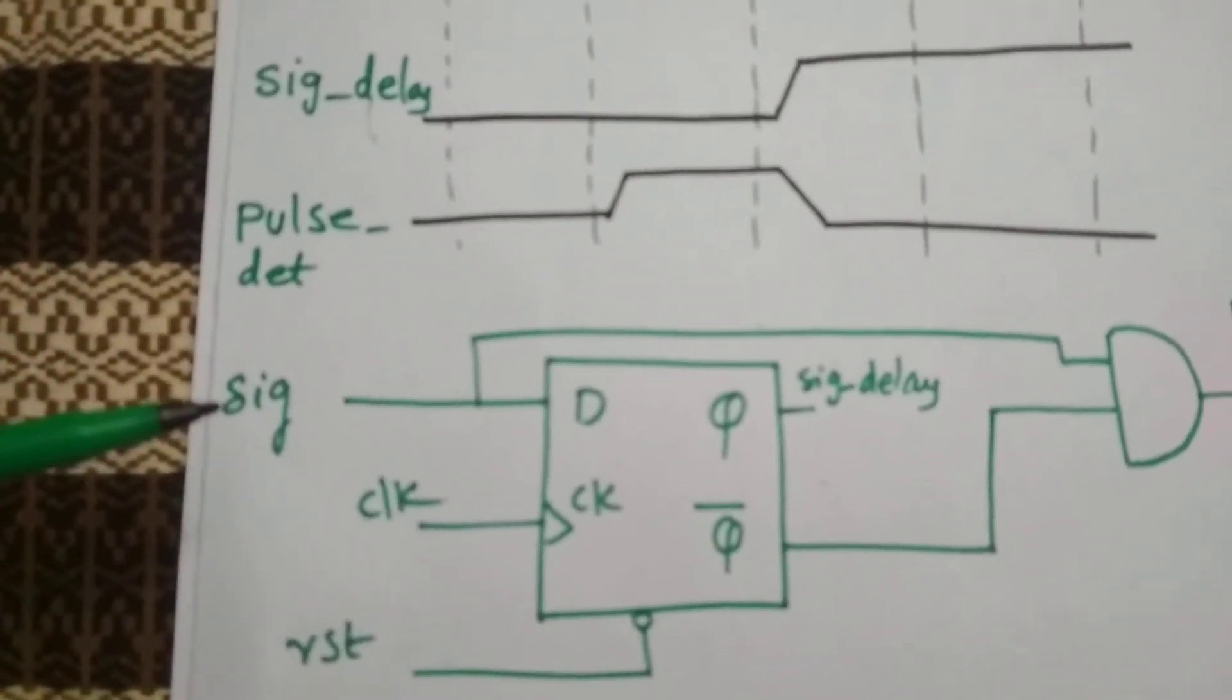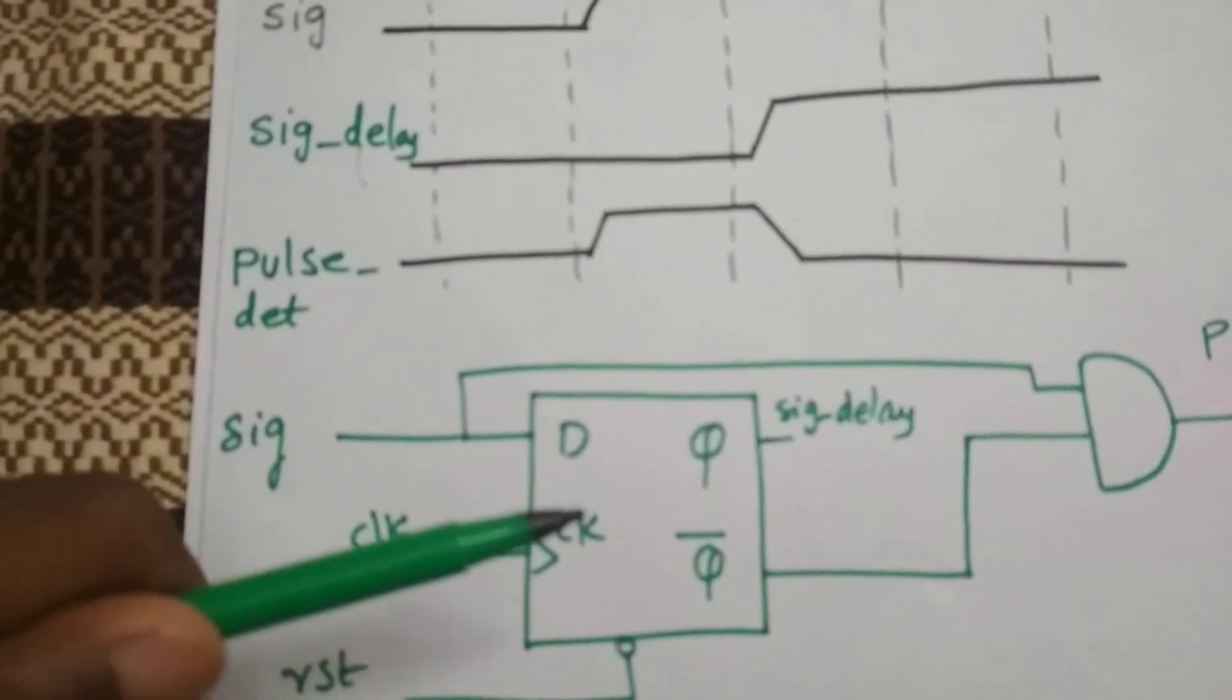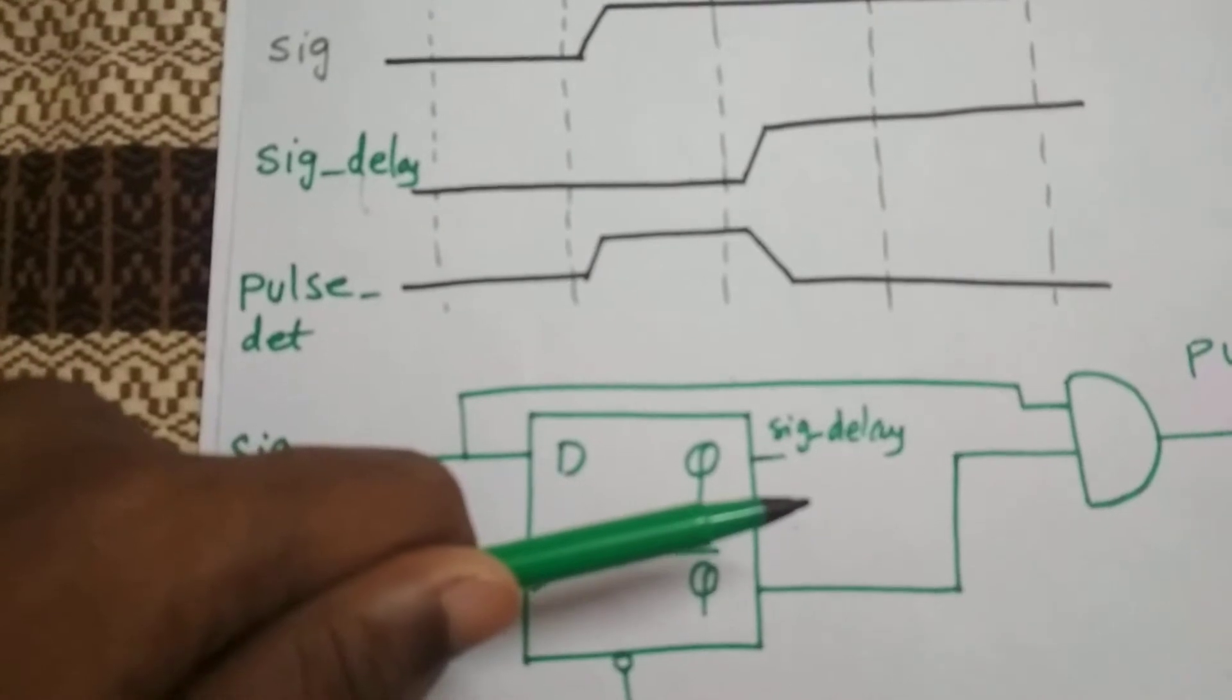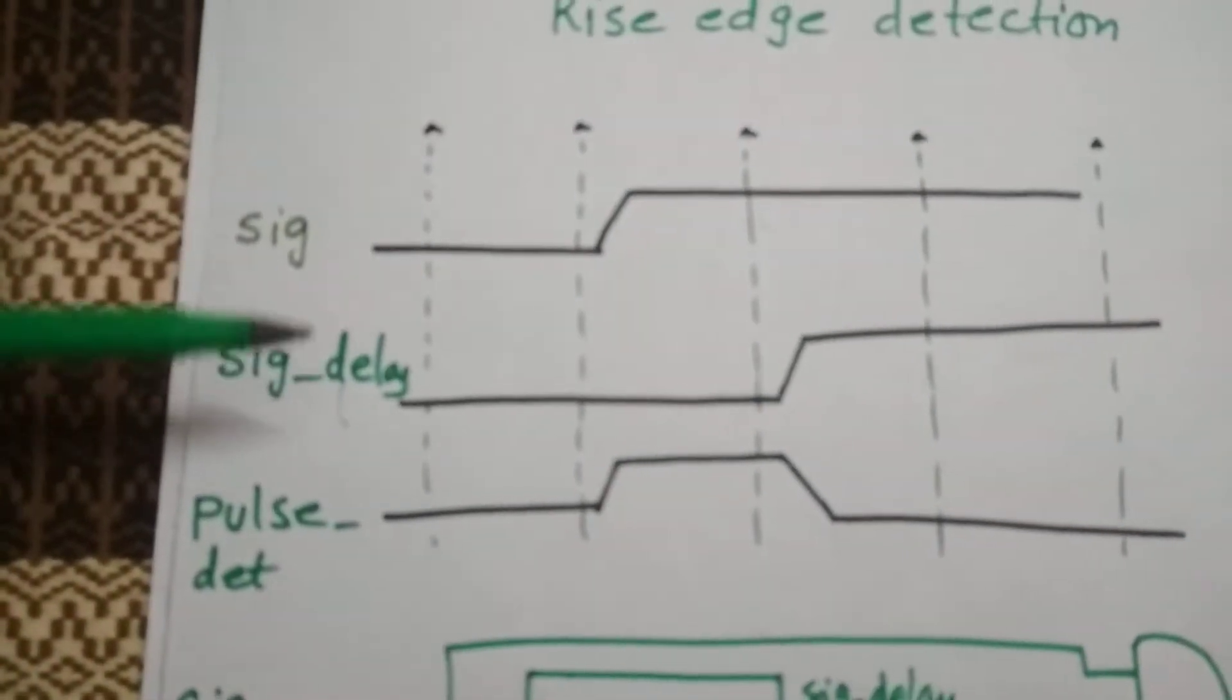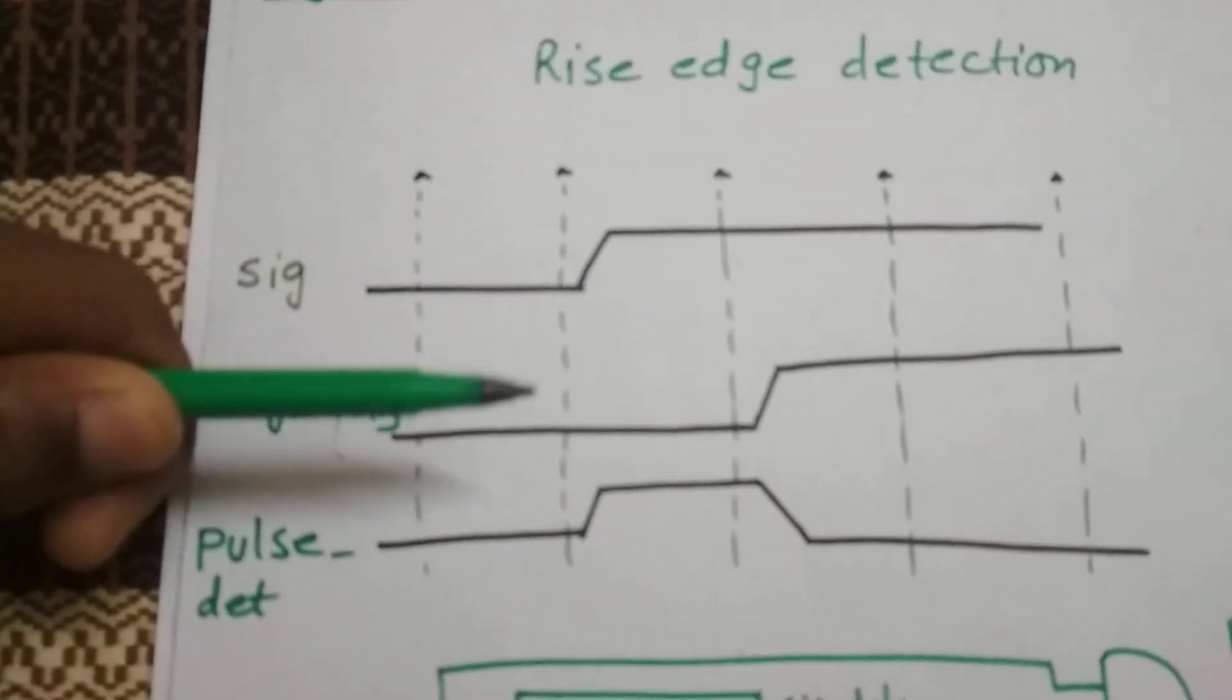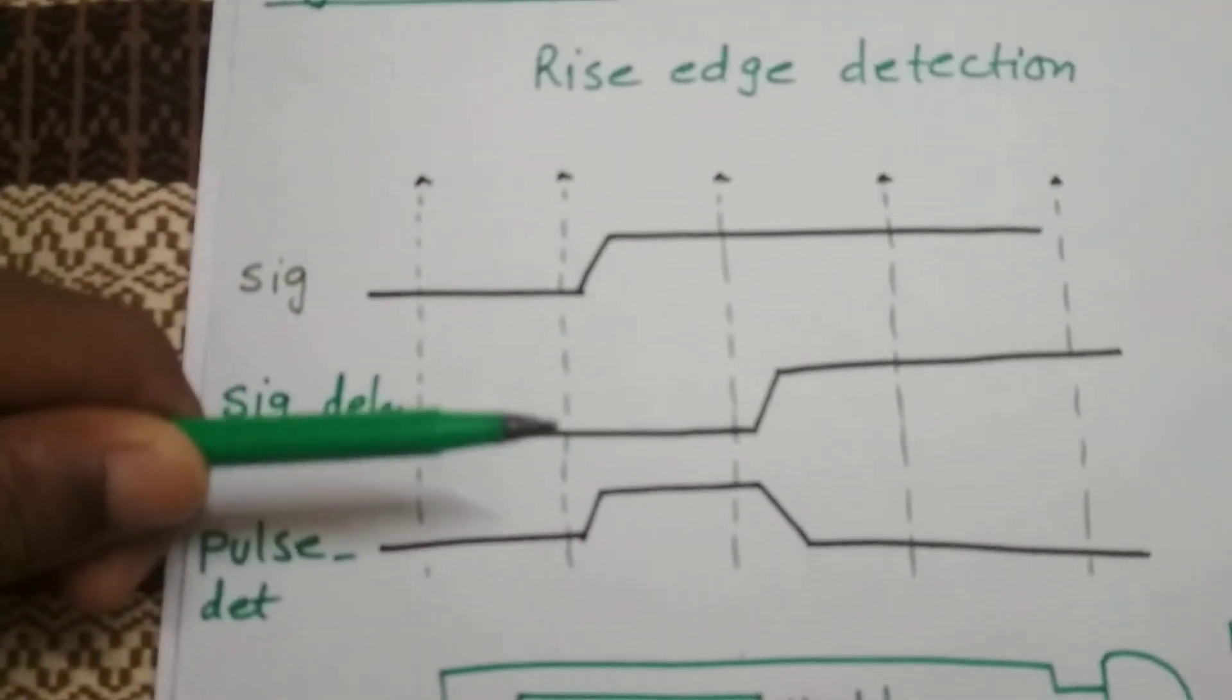I'm going to pass my signal through a flop which will give me a delay of one clock period and get the same signal back. As you can see I got a signal delay which is exactly the same but I got a one clock period delay.